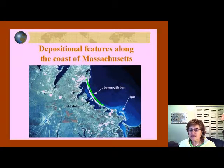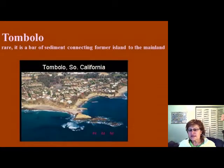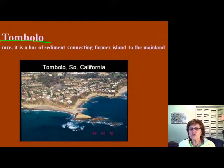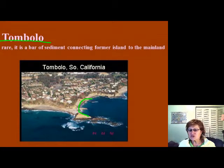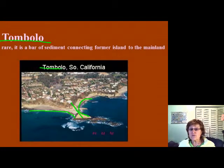You can see a beautiful bay mouth bar and a spit right here. The third depositional form you need to know is the tombolo — this is when a sea stack out in the ocean becomes connected to the land by accumulated sand. It's a very rare form, but we call it a tombolo.